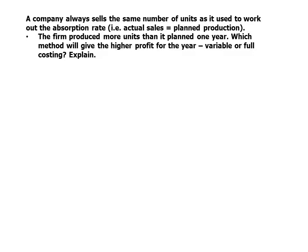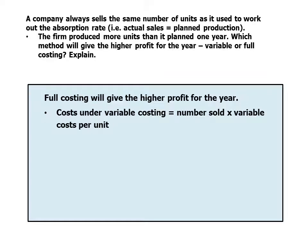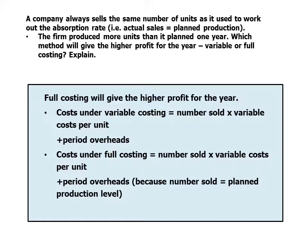Different scenario: a company always sells the same number of units as it used to work out the absorption rate, so actual sales equals planned production. The firm produced more units than it planned one year. Which method will give the higher profit — variable or full costing? Full costing will give the higher profit. Under variable costing, costs are: units sold times variable cost per unit, plus the period overheads. Under full costing, costs include the same variable component and the period overheads since units sold equals planned production, but in addition there is a reversal of the over-recovery, which lowers costs and increases profit for the year.